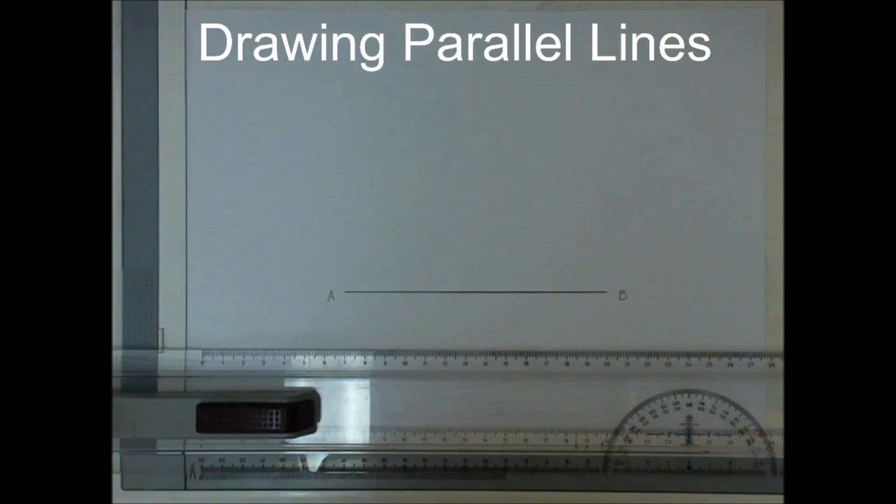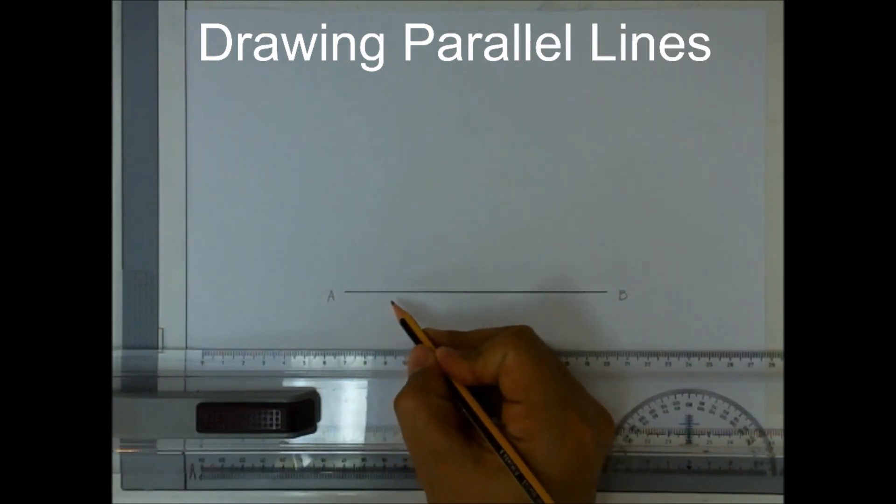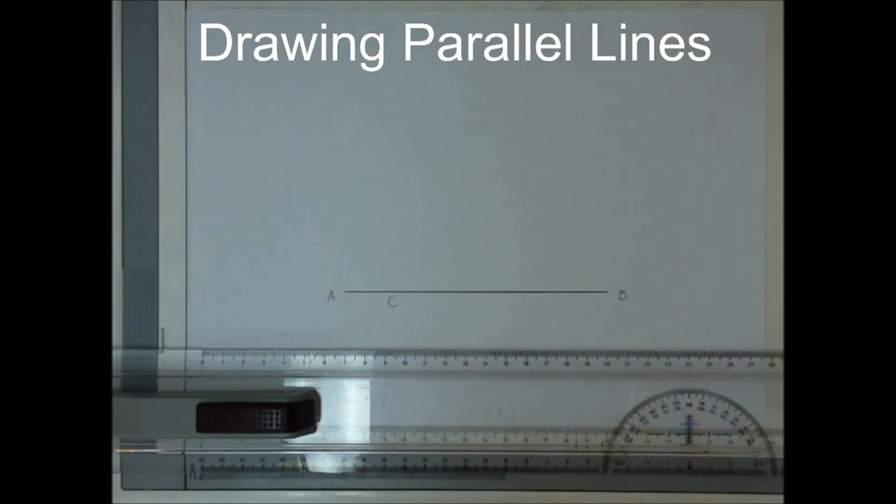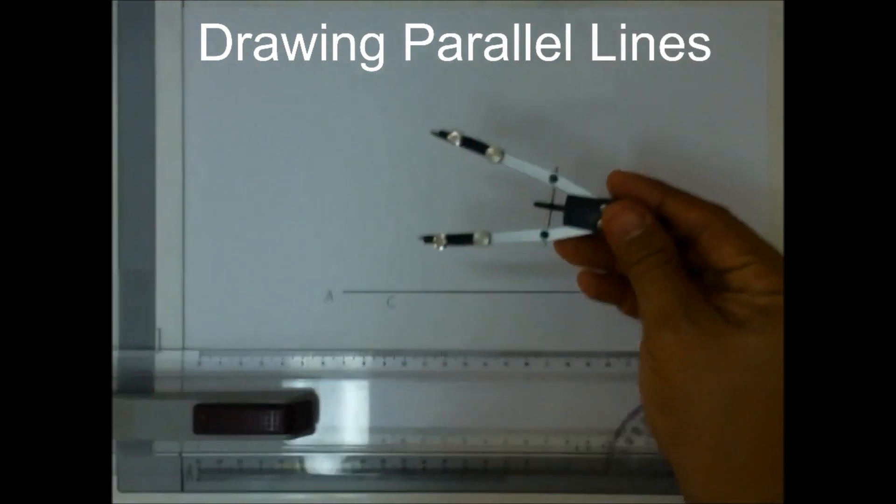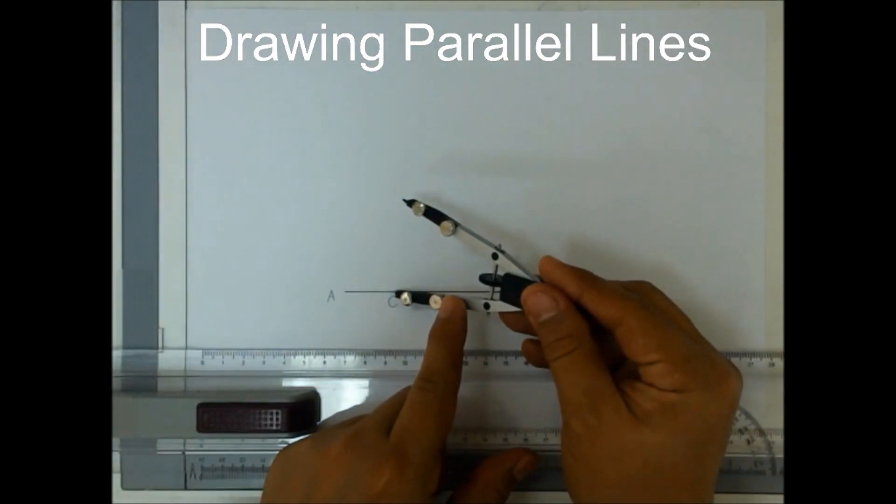First step is locate a point from this side of your line. Let's say for example, point C is right here in this part, and then using your compass, draw an arc from point C.